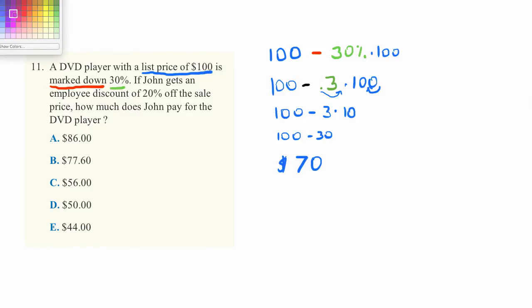John gets an employee discount of 20% off the sale price. The sale price is $70 that we just calculated. So how much does John pay? We just need to do the same thing over again.